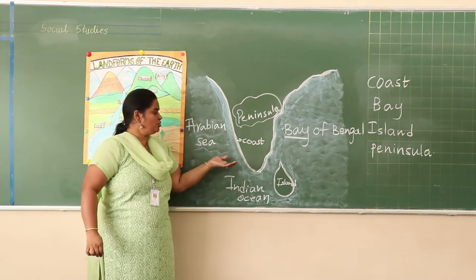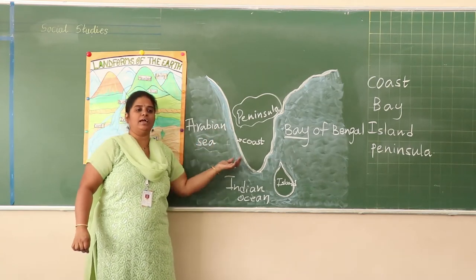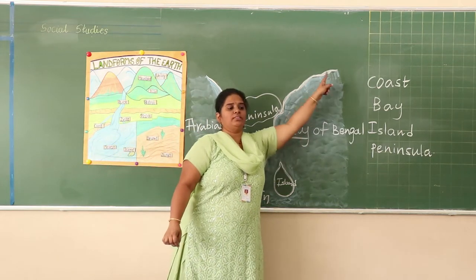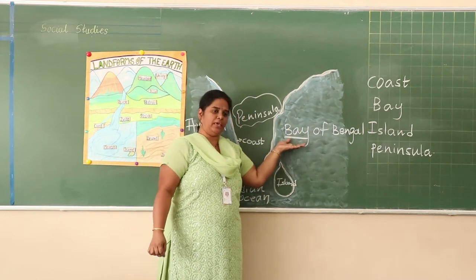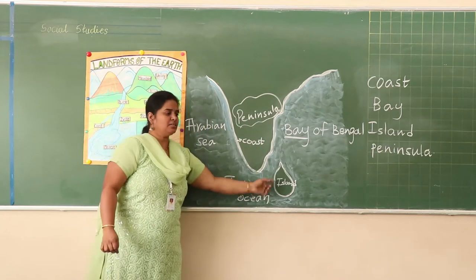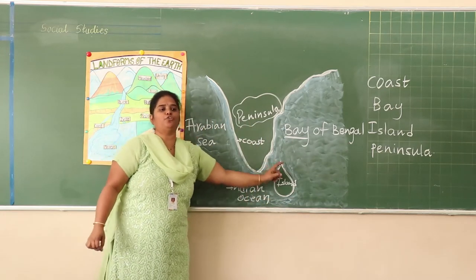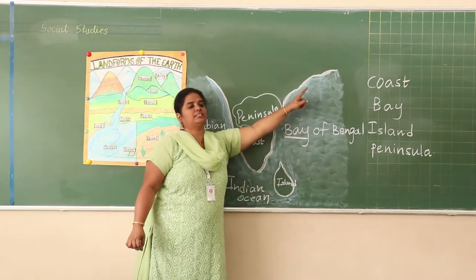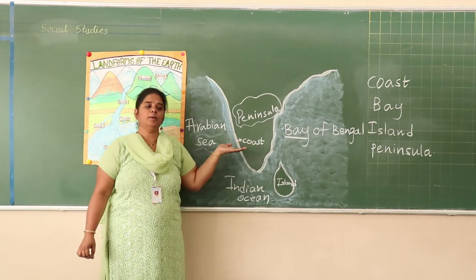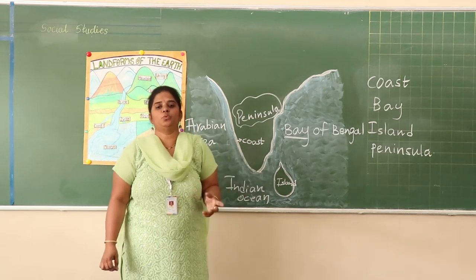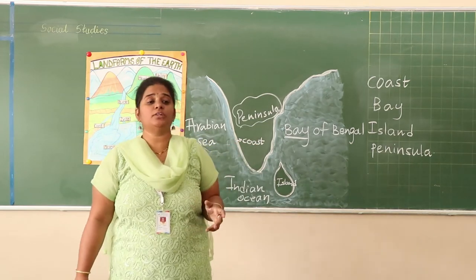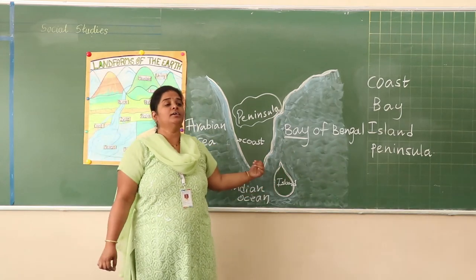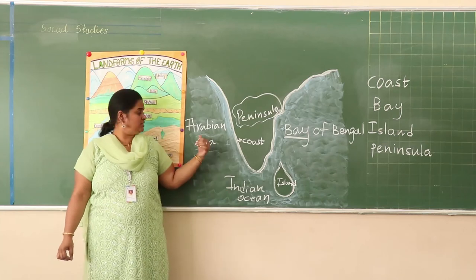You understood now? Coast is nothing but where the land meets the sea. A water body surrounded with three sides of land is called a bay. A landmass which is surrounded with four sides of water is called an island. And a landmass which is surrounded with three sides of water is a peninsula. That is why India is called a peninsula country, because it is surrounded by three sides of oceans.